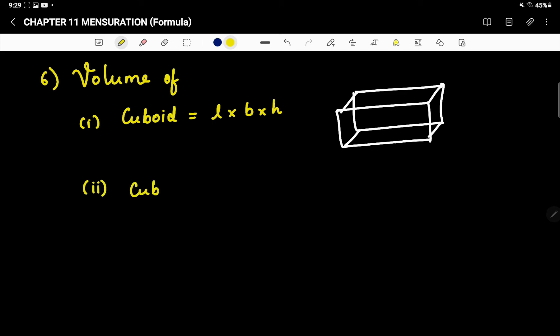Next is cube. Cube is l³. Cube is just like a die. It is square basically. This is a cube.